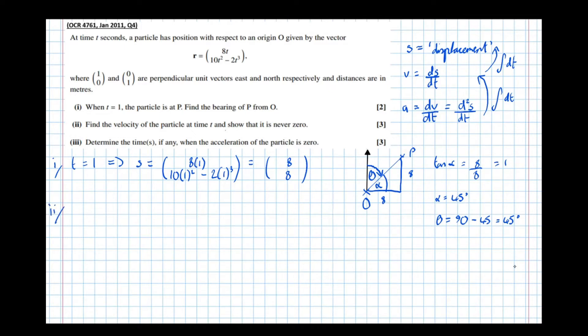Part 2: Find the velocity at time t and show it's never zero. We find ds/dt by differentiating the displacement. The velocity equals (8, 20t - 6t²).